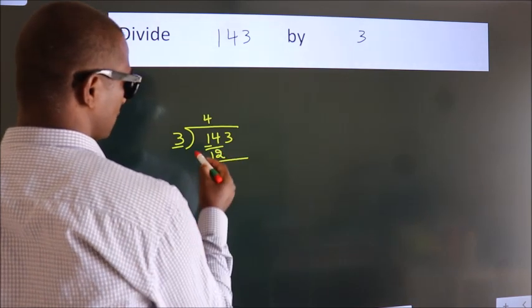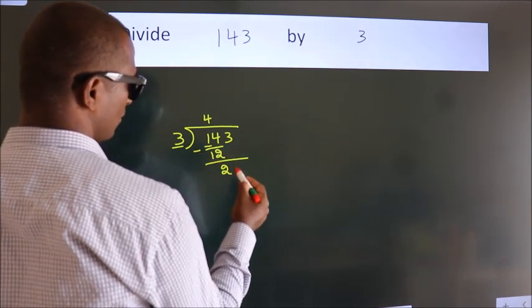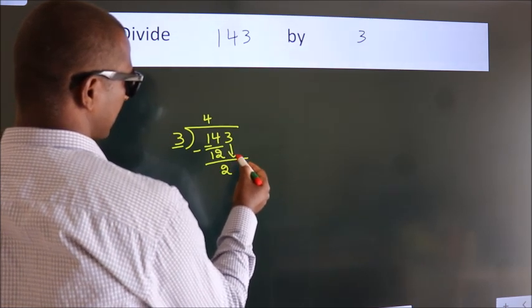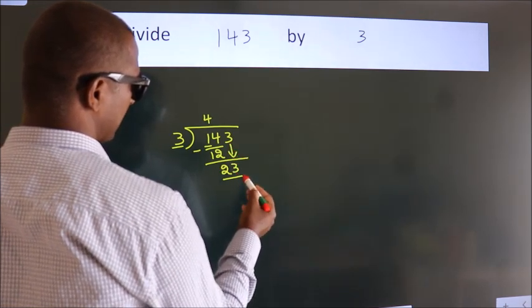Now we should subtract. We get 2. After this, bring down the beside number. So 3 down, so 23.